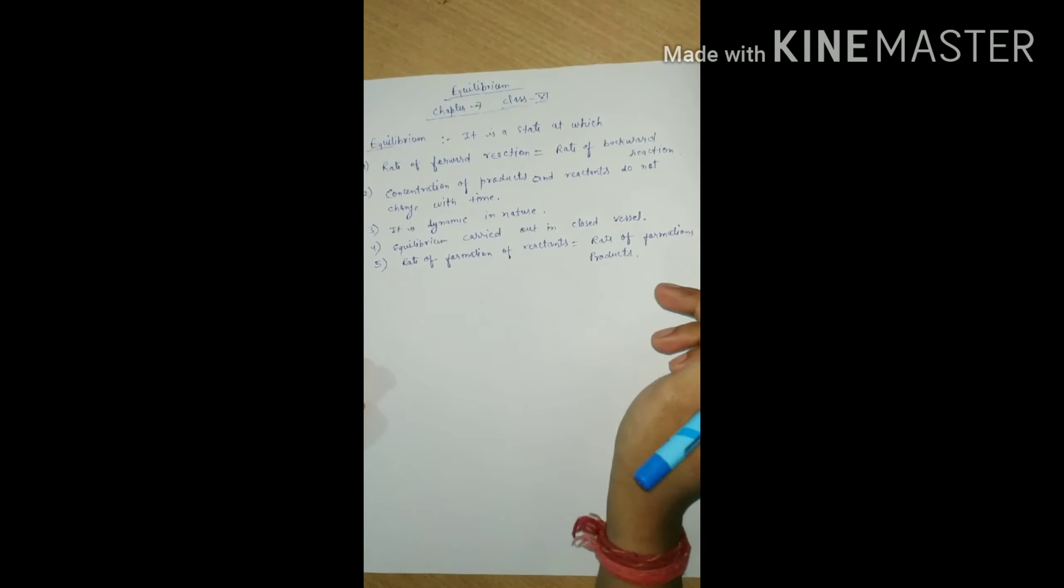Now we have categorized the equilibrium in three subcategories, so there are three types of equilibrium. First is physical equilibrium, second is chemical equilibrium, and third is ionic equilibrium.